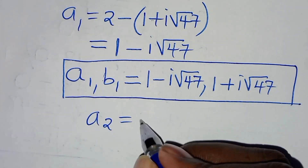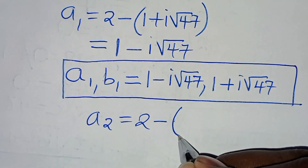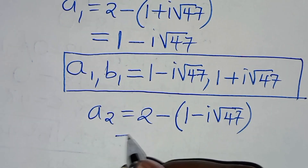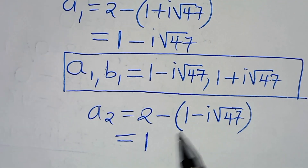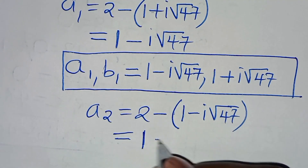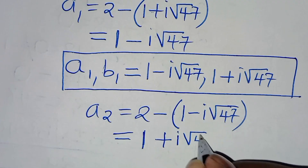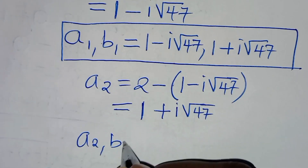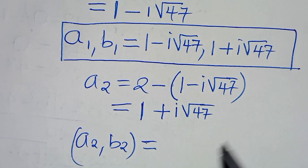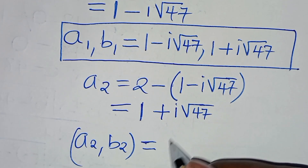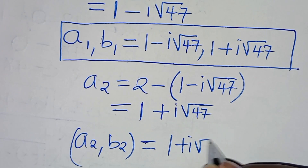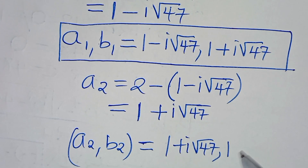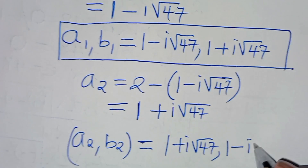Now let's find a2. Remember a2 equals 2 minus b2, and b2 is 1 minus i√47. So we have 2 minus 1 minus times minus i√47, giving us 1 plus i√47. Therefore a2 equals 1 plus i√47, and b2 equals 1 minus i√47. This is the second set of solutions.